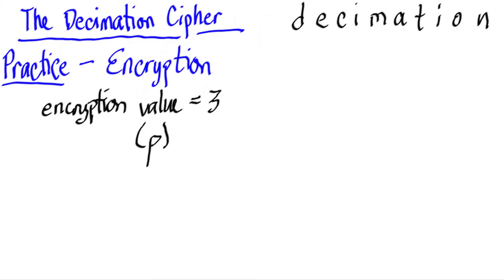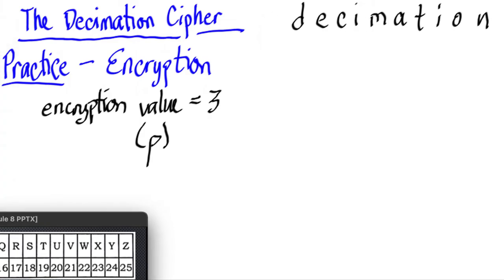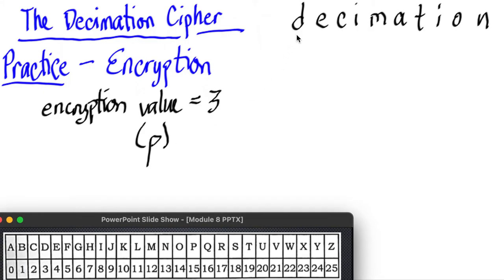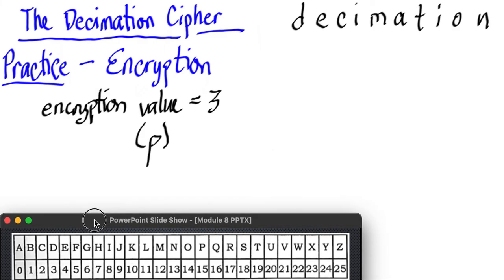So what we're going to do first is we're going to convert these letters right here into numbers, just like this one. So we say that d is equal to 3, e is equal to 4, c is equal to 2, i is equal to 8, and so on. So you just copy that, have a copy of your own.